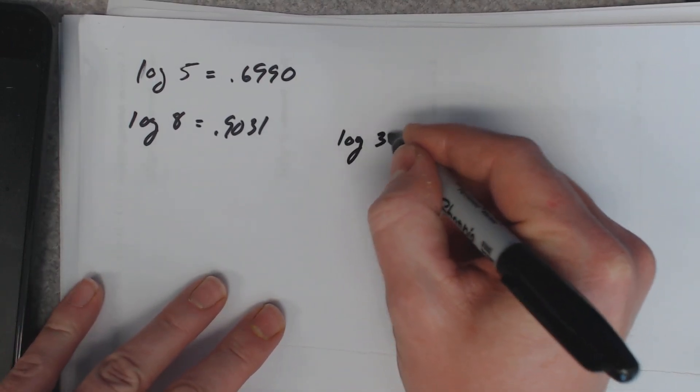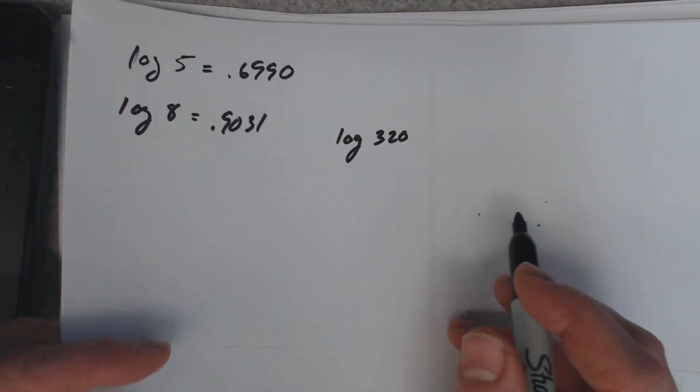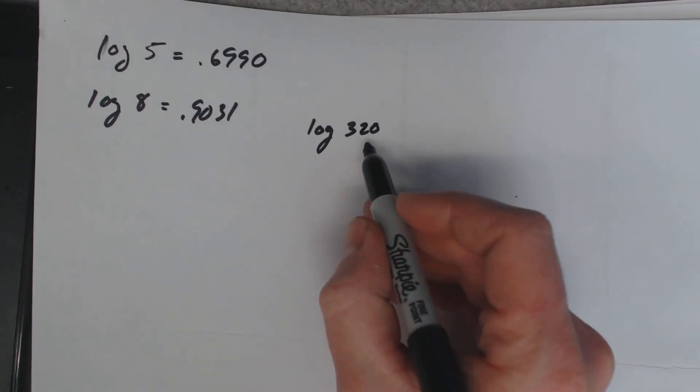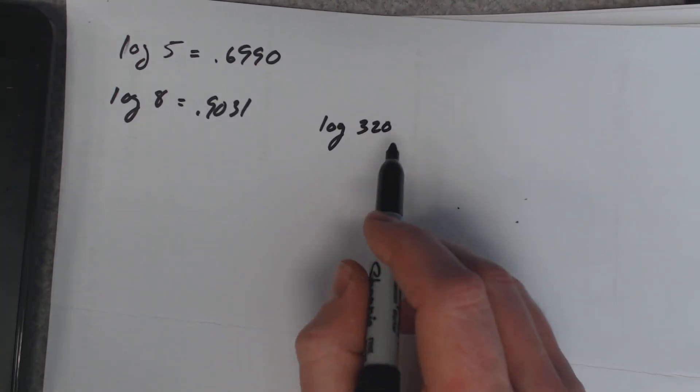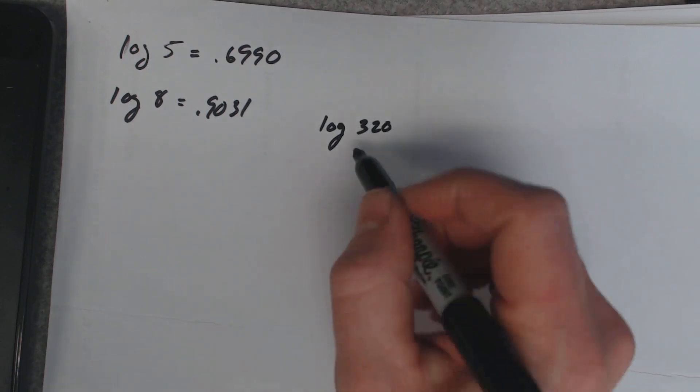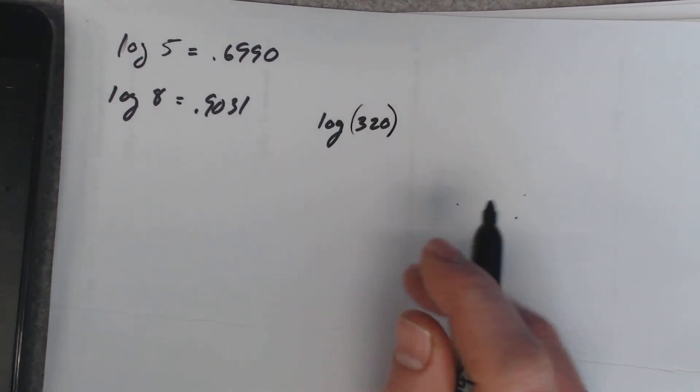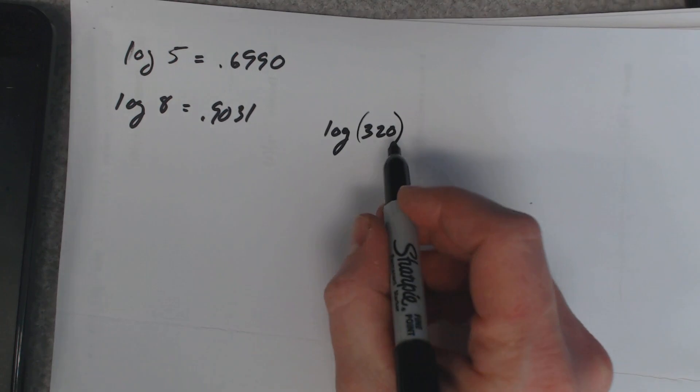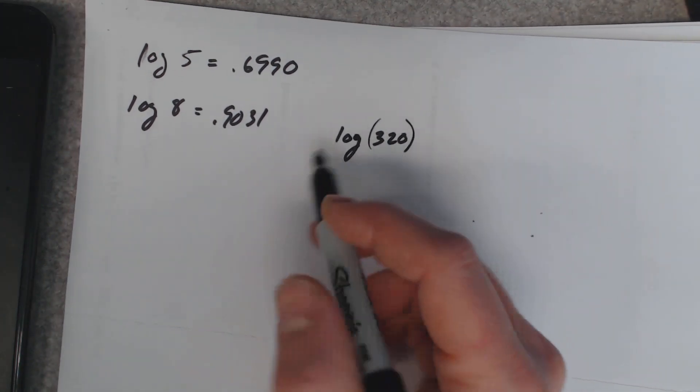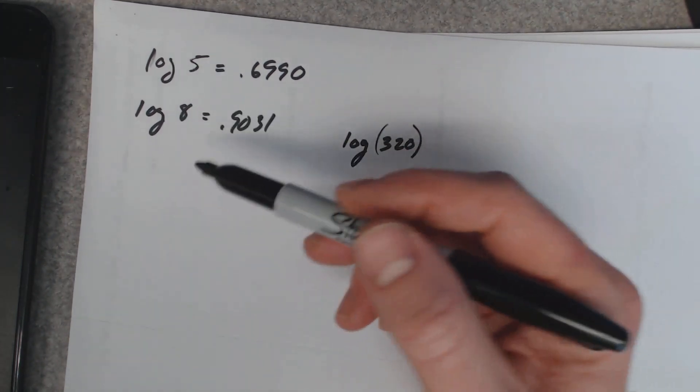We need to figure what this is. You want to use the property of logarithms, and the idea is if there's some type of multiplication going on here you can split it up using addition. So I'm going to rewrite this 320 somehow using 8 and 5.